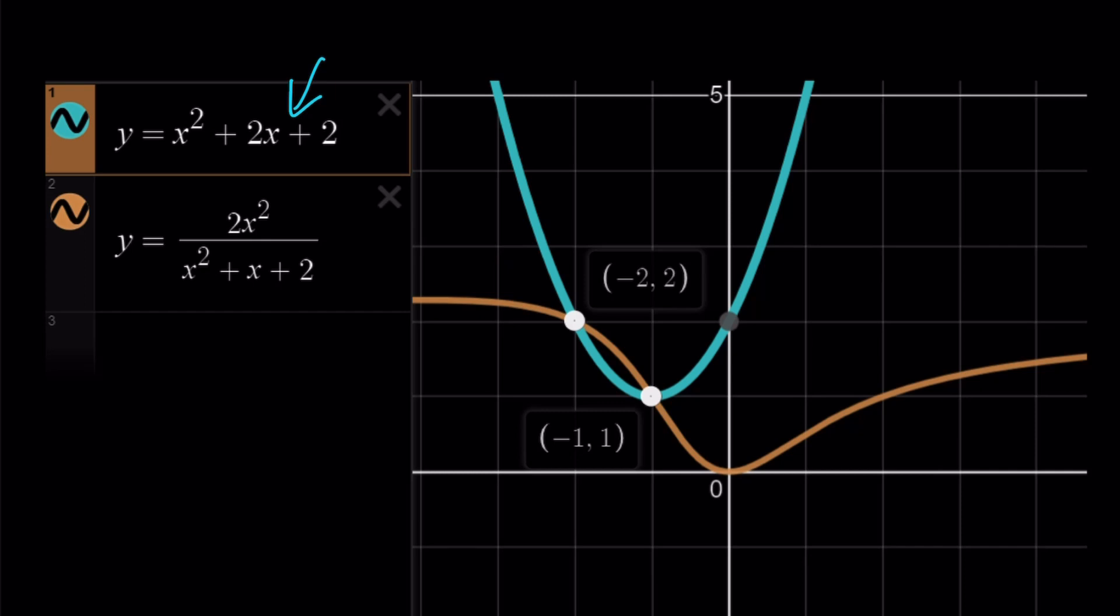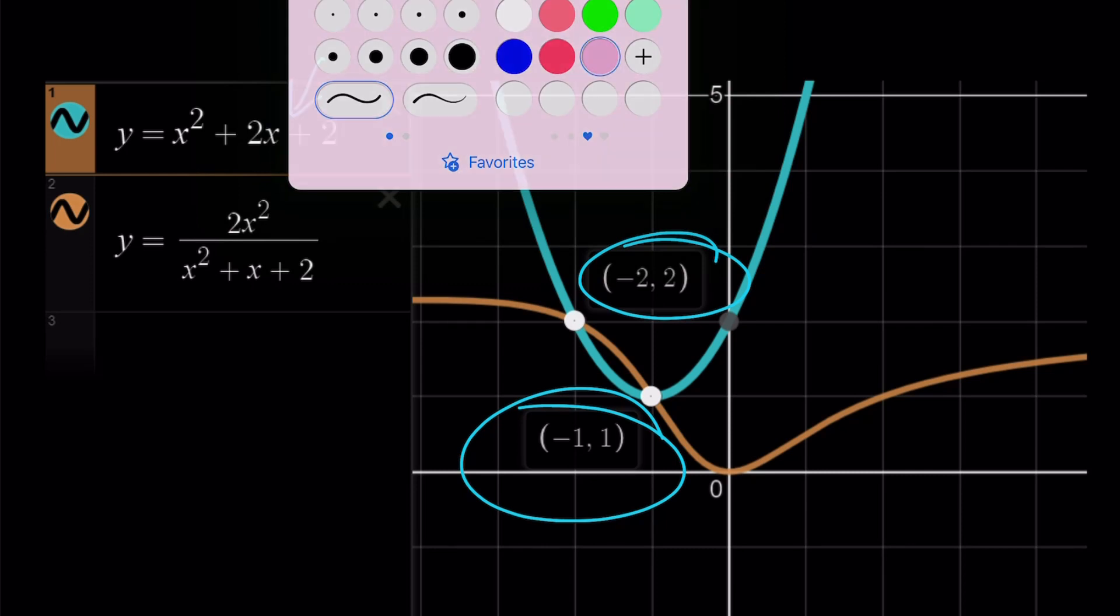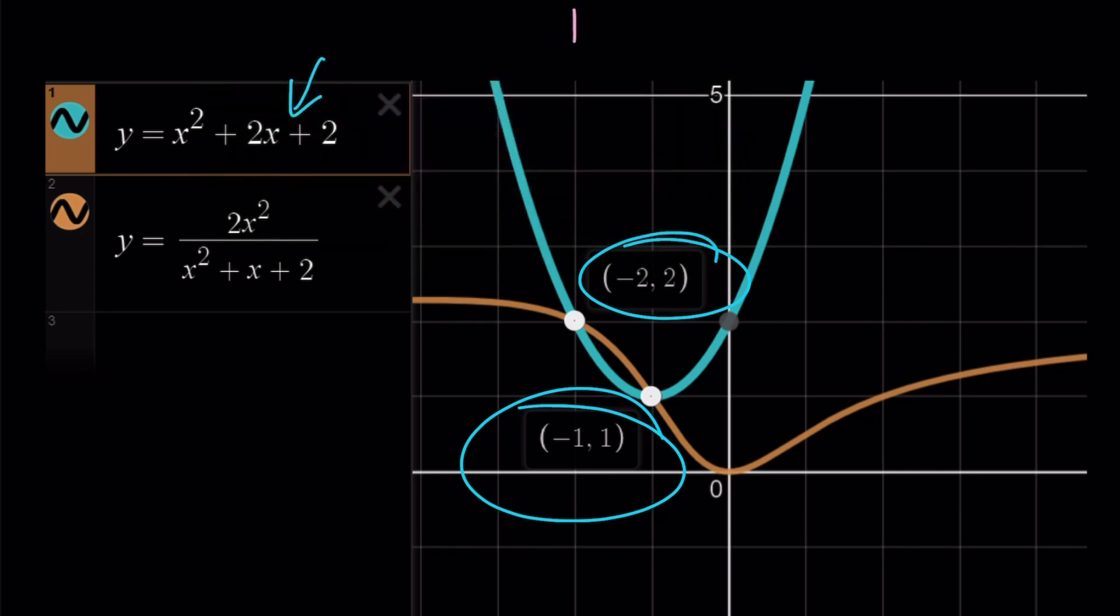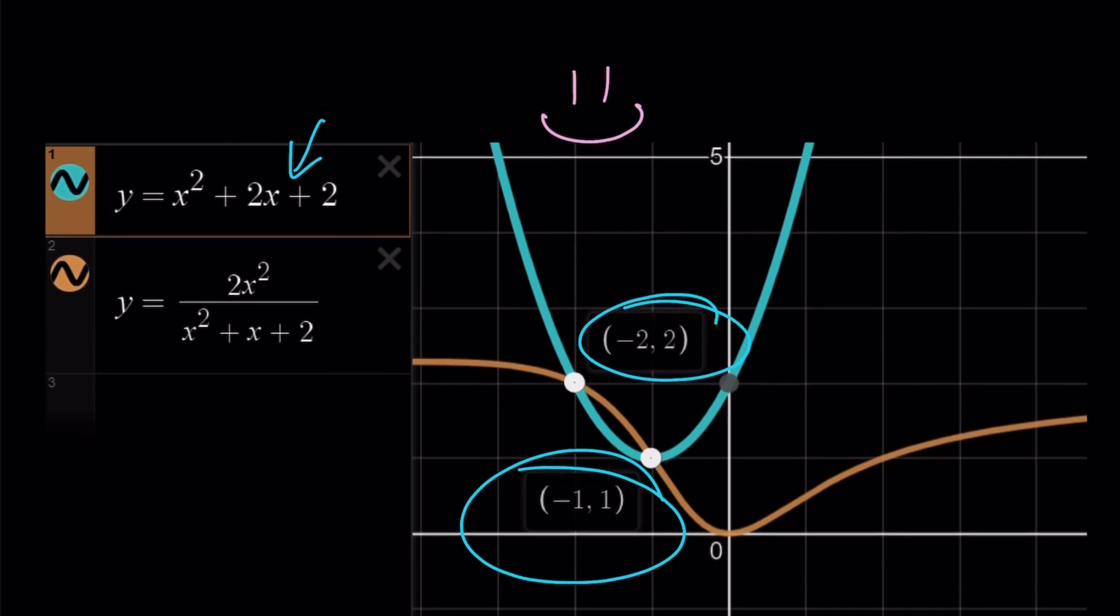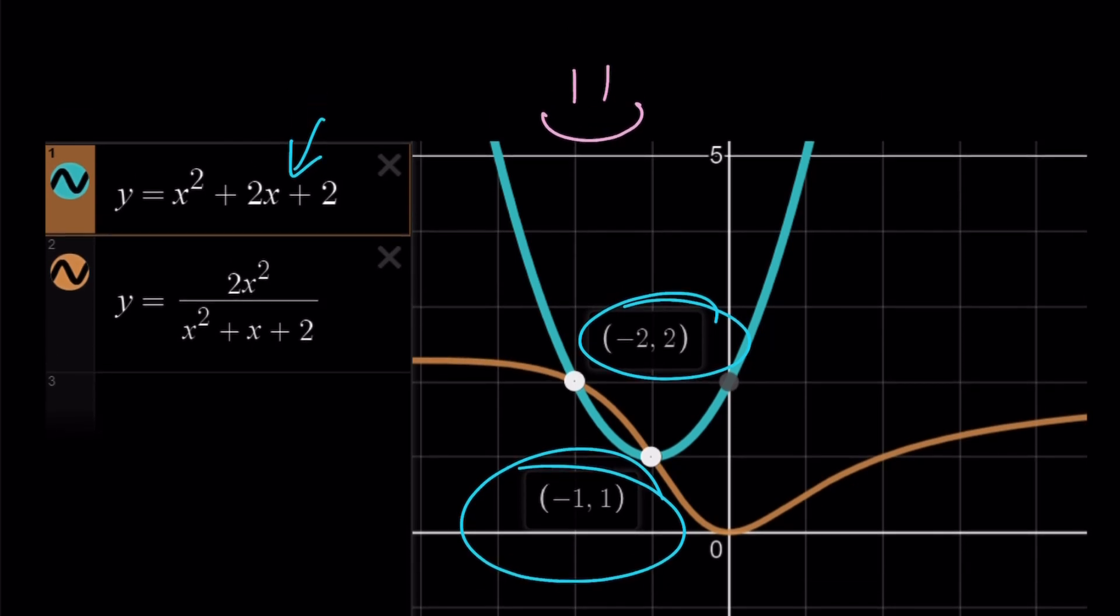Anyways, they intersect at two points, negative 2,2 and negative 1,1. That's it, because the other solutions are complex. Awesome. And this brings us to the end of this video. Thank you for watching. I hope you enjoyed it. Please let me know. Don't forget to comment, like, and subscribe. I'll see you tomorrow with another video. Until then, be safe, take care, and bye-bye.